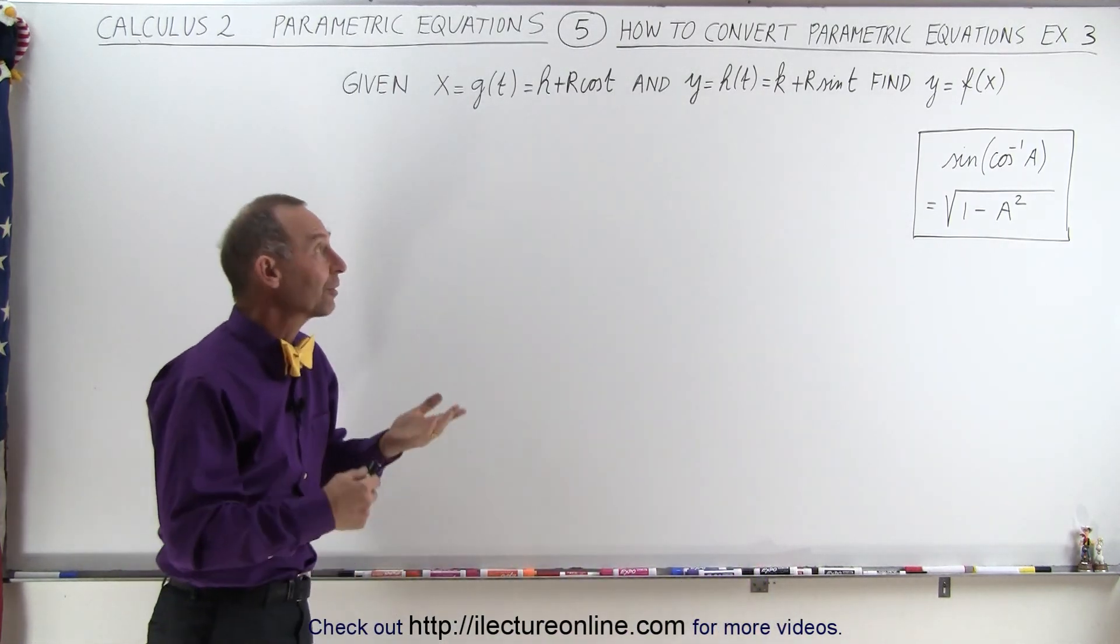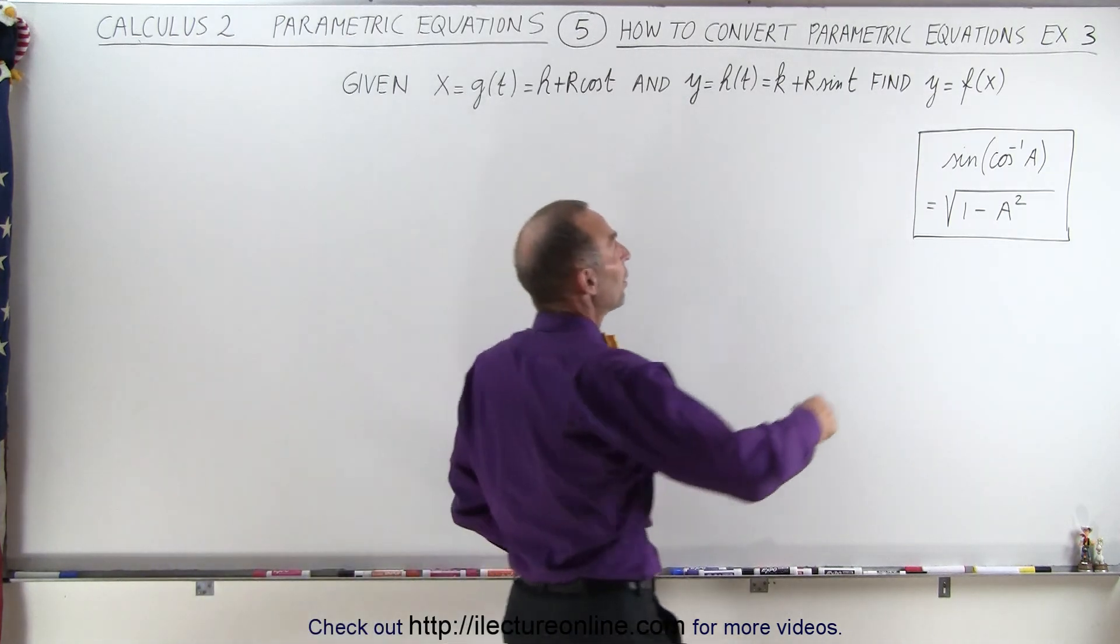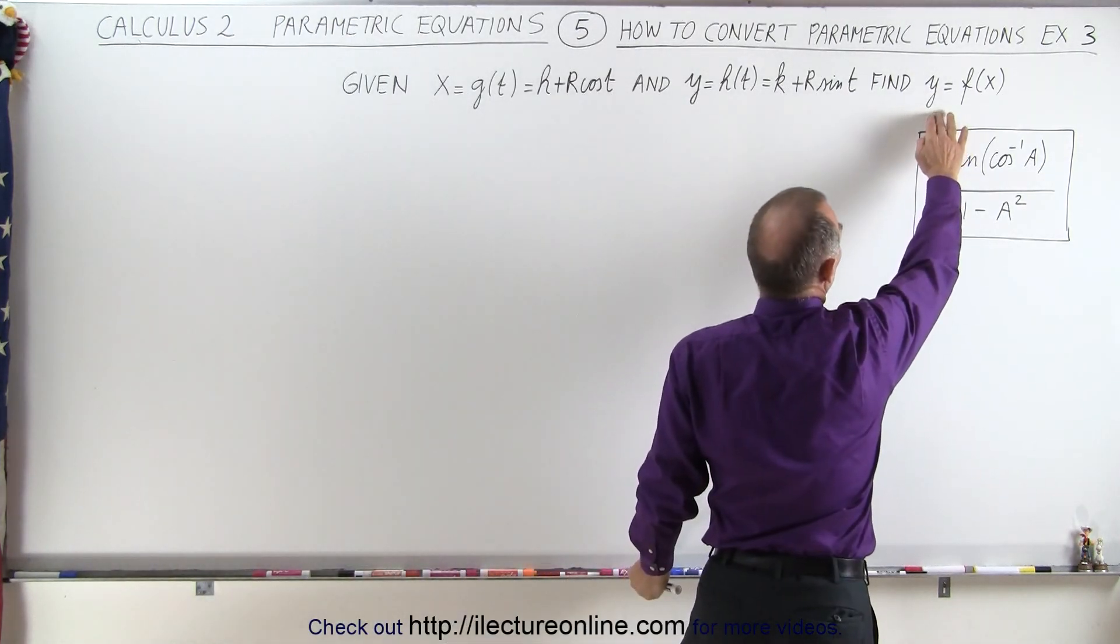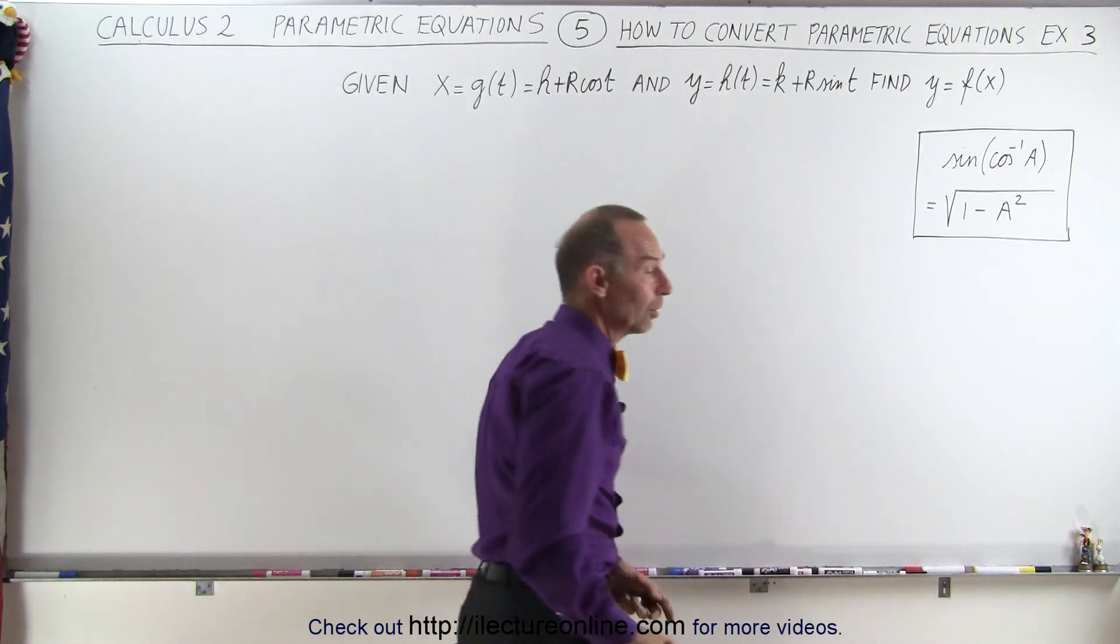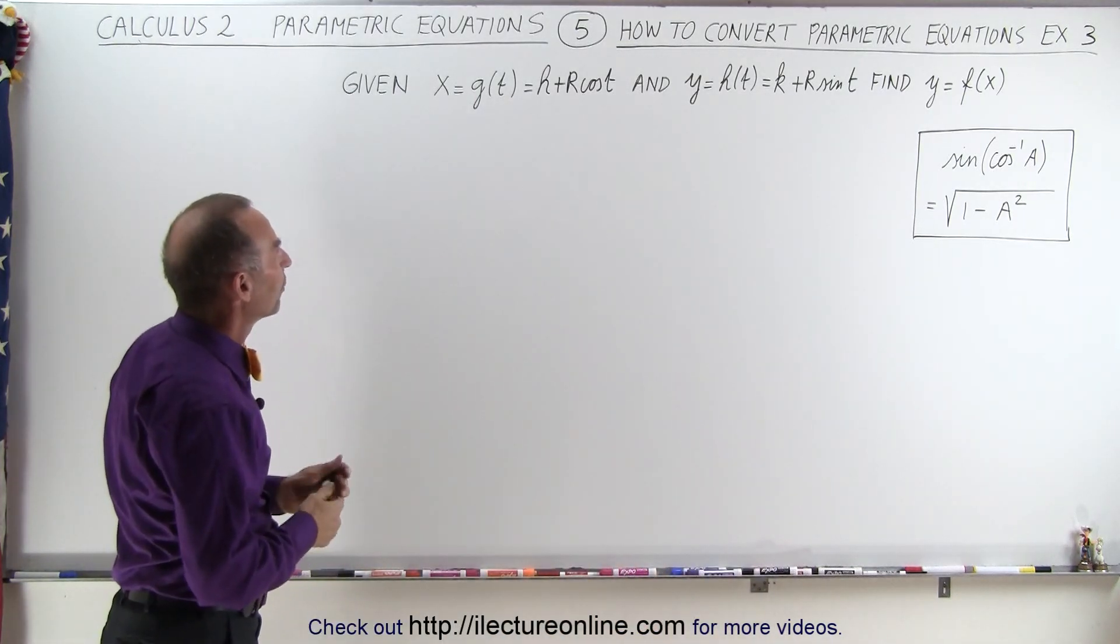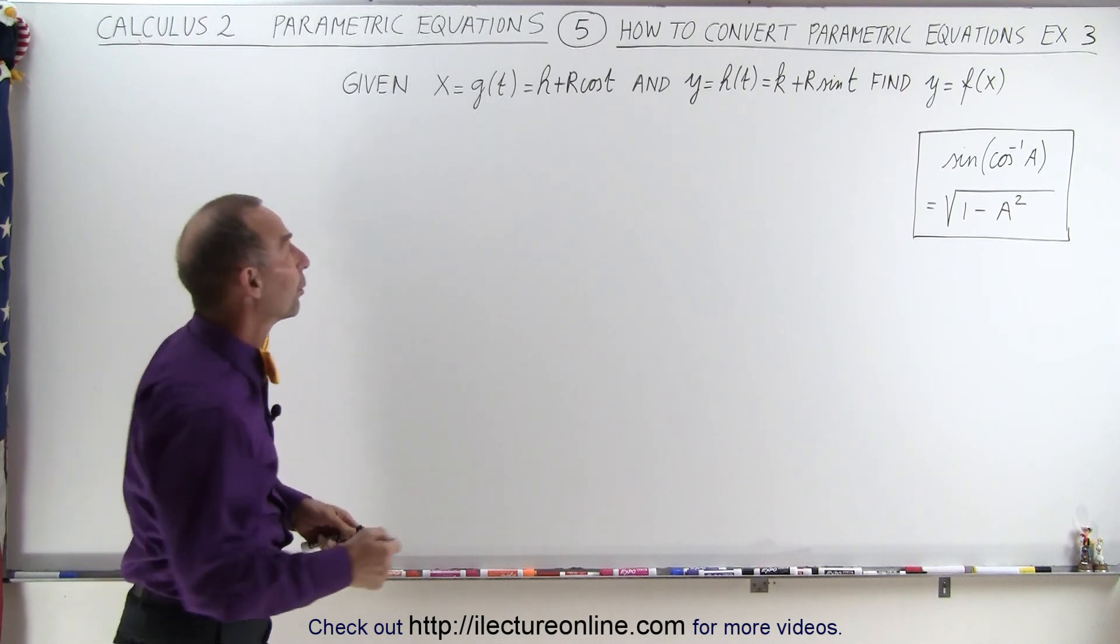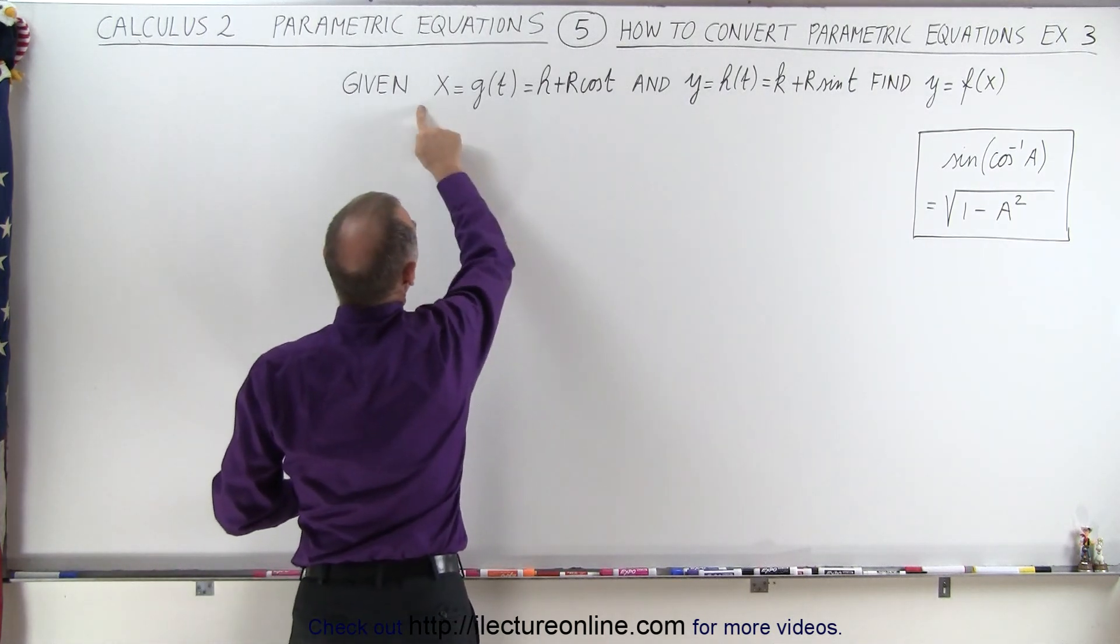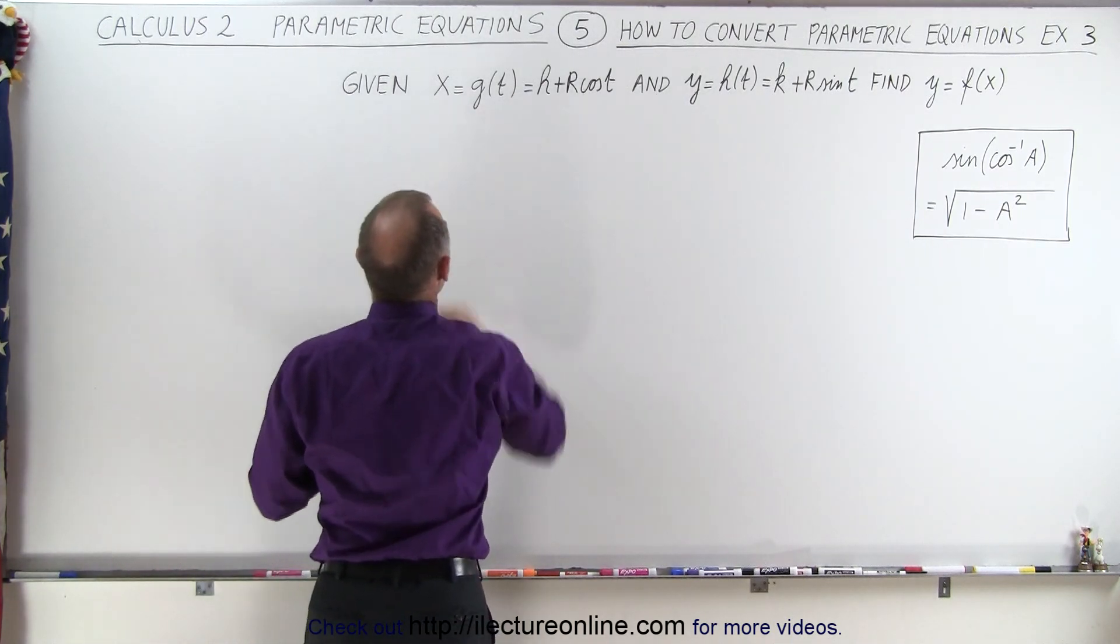What does that look like? What kind of equation will we end up with when we try to solve for an equation where Y equals some function of X? Which means we need to eliminate the variable T. So what we're going to do, just like before, we're going to solve in this first equation T in terms of X.